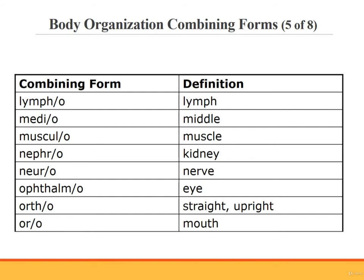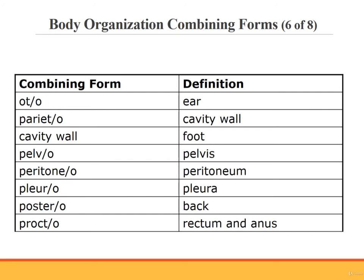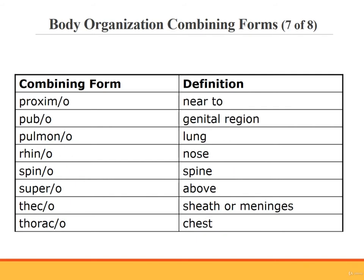Ophthalmo. Ortho. Oro. Oto. Parieto. Pelvo. Pedo. Peritoneo. Pleuro. Postero. Procto. Proximo. Pubo. Pulmono. Rhino means nose. An example of a medical term using the combining form rhino is rhinitis, such as allergic rhinitis. Rhinitis means inflammation of the nose.